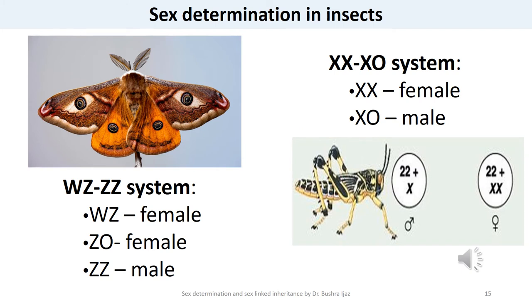Insects are the most diverse class of organisms on the planet, so it is not surprising that they show considerable diversity in their mechanisms for sex determination. Like most other animals, the majority of insects have dimorphic sex chromosomes that can be distinguished cytologically. Animals with two different sex chromosomes are the heterogametic sex and are able to produce two types of gametes, while members of the homogametic sex produce only one type. In humans and many other animals, males have one X and one Y chromosome and are therefore heterogametic, while females with two X chromosomes are homogametic.